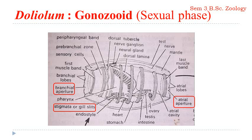As seen in the image of Doliolum, you could see even the gill slits marked. The mantle contains around eight muscle bands that completely encircle the body. The first and the last muscle band act as sphincters — somewhat like a valve — so they contract to close the aperture and expand to open it.